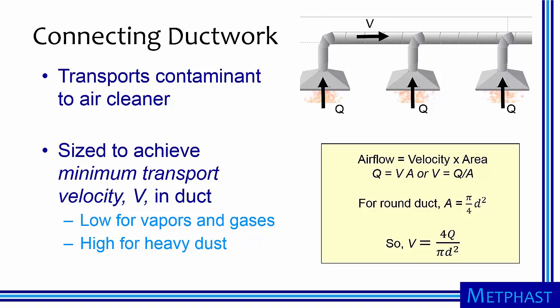Connecting ductwork serves to transport the contaminant from the hood to the air cleaner. Ductwork is sized to achieve a minimum transport velocity, symbolically represented with a capital V. Minimum transport velocity depends on the type of material being conveyed. Vapors and gases are easy to move, so transport velocity can be low relative to the high transport velocities required to move heavy dusts, such as sand from casting metal.